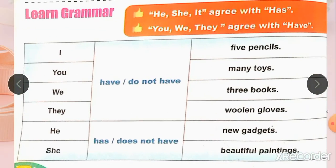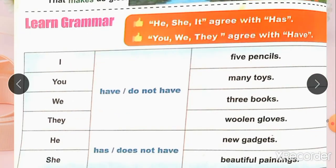بک کی طرف آتے ہیں students۔ Learn Grammar: He, she, it اور singular noun کے ساتھ has use کرتے ہیں۔ While I, you, we, they کے ساتھ have use کریں گے۔ اس کے علاوہ plural noun کے ساتھ بھی have use ہوتا ہے۔ As you can see in the picture: I have five pencils, you have many toys, we have three books, they have woolen gloves.